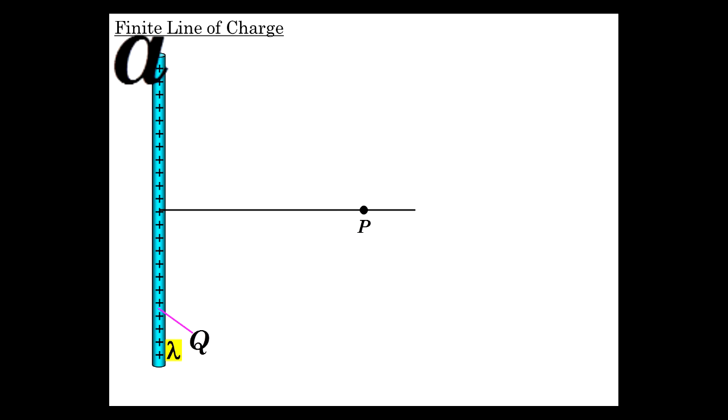So at point P, what's the potential? The line of charge has linear charge density lambda with total charge Q, going from minus A to A. We'll put a differential charge here, dq, in the Y direction, dy.